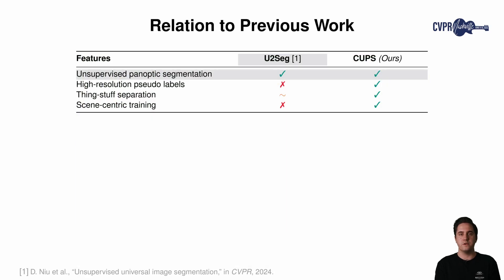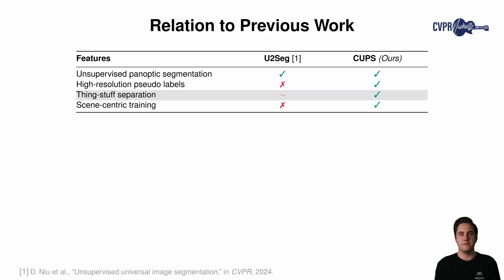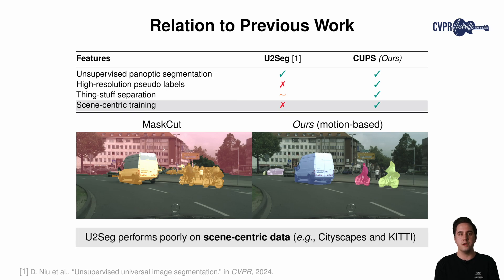While several works approach unsupervised semantic or instance segmentation, we are only aware of a single existing unsupervised panoptic segmentation approach: U2SEC by Nu et al. U2SEC suffers from low-resolution semantic pseudolabels and bypasses the panoptic thing-stuff separation. Furthermore, U2SEC requires object-centric training data, meaning images with one main object in the foreground and a uniform background. Applying MaskCut, the core instance pseudolabeling approach of U2SEC, to scene-centric images fails. Consequently, U2SEC performs poorly on scene-centric data, while our approach overcomes these limitations.